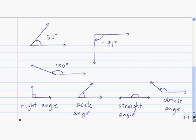There are a few special types of angles. The first is called a right angle — a right angle is a 90 degree angle. An acute angle is an angle whose measure is between 0 degrees and 90 degrees. A straight angle is an angle that is 180 degrees. And an obtuse angle is an angle between 90 degrees and 180 degrees.